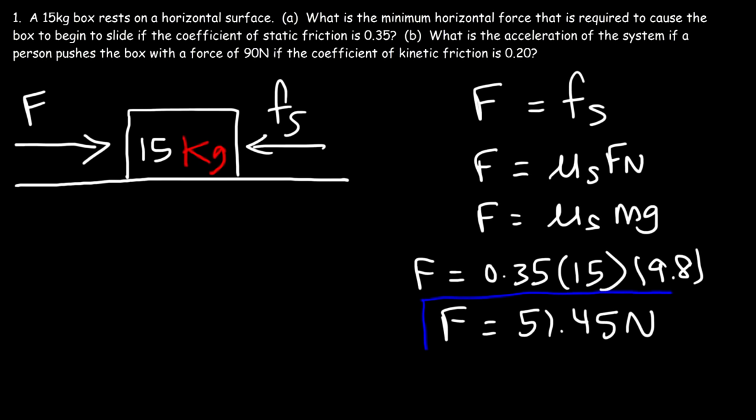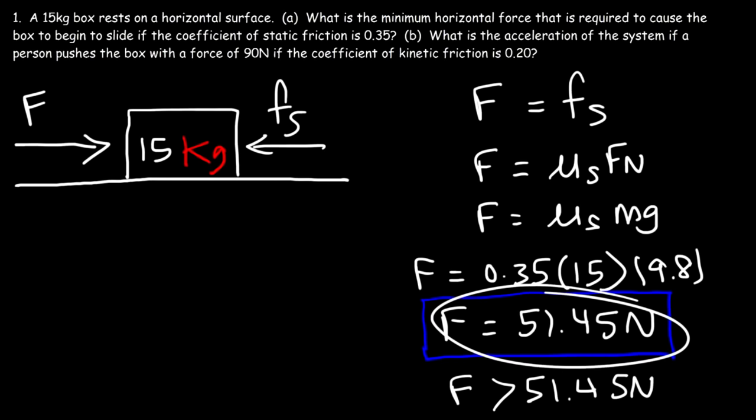If the force is less than 51.45 N, the box will not slide. Even at exactly 51.45 N, the net force is still 0 — it has to be just above. So 51.46 N causes movement, 51.44 N does not. 51.45 N is the threshold where technically it doesn't move. For all practical purposes, we say 51.45 N is the threshold value.